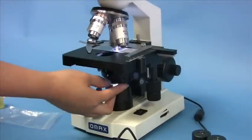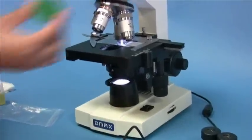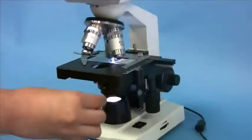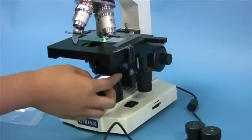You can also change the color using a color filter and simply place it in the filter holder and slide it under the condenser.